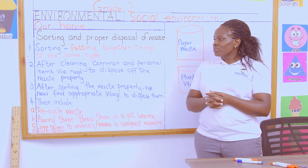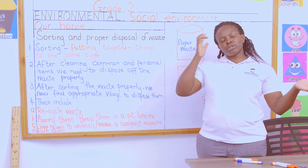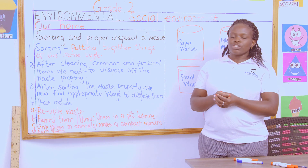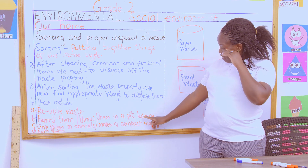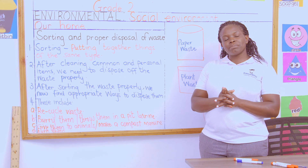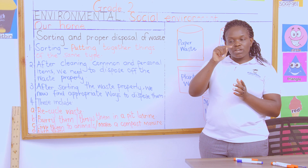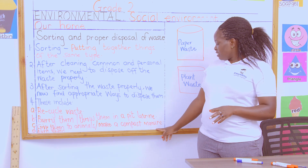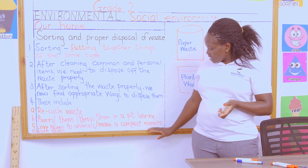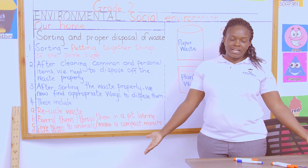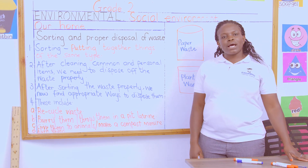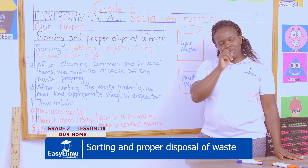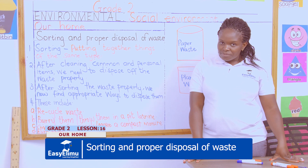I believe most of you have seen the way waste is being disposed of. Do you remember Janet telling me about someone carrying bottles in a sack? They were being taken to the factory for recycling. When you saw mommy throwing broken glass in a pit latrine — that was proper disposal, so it cannot cause accidents, especially for young kids. Some farmers use compost manure made from plant waste instead of fertilizer.